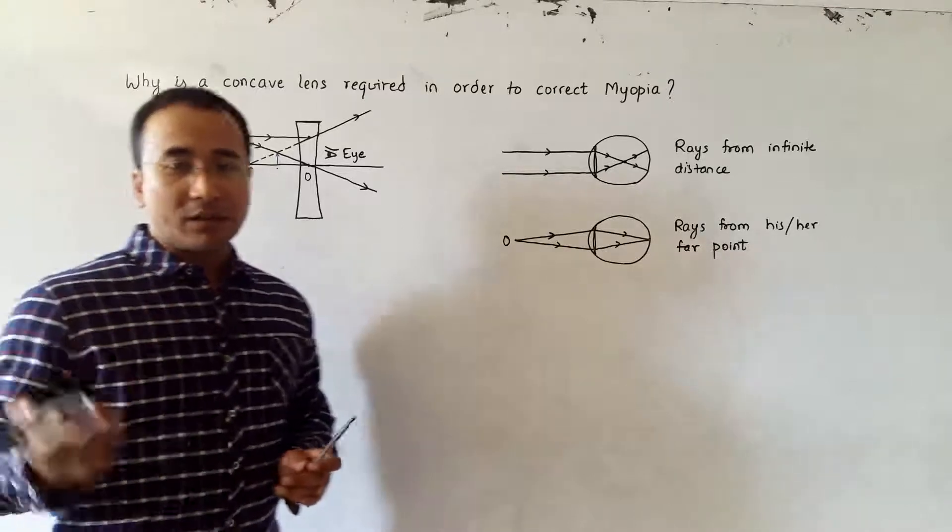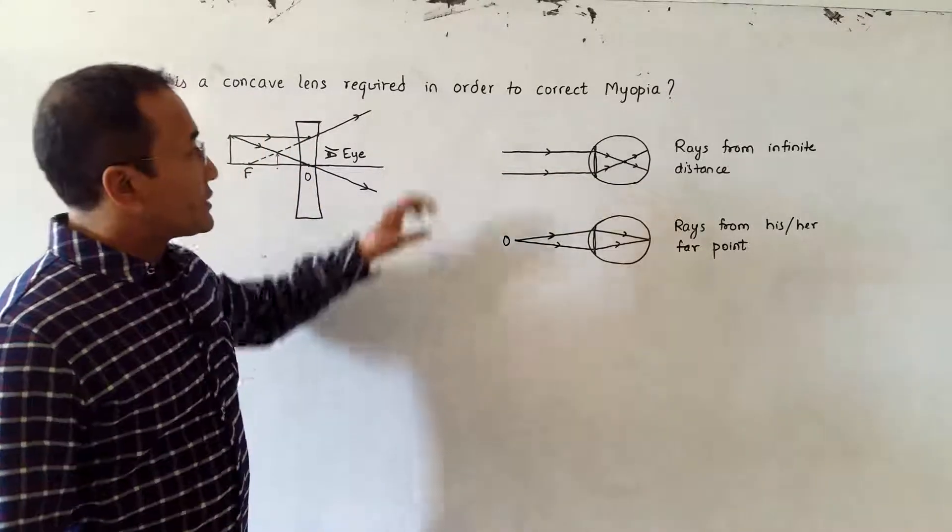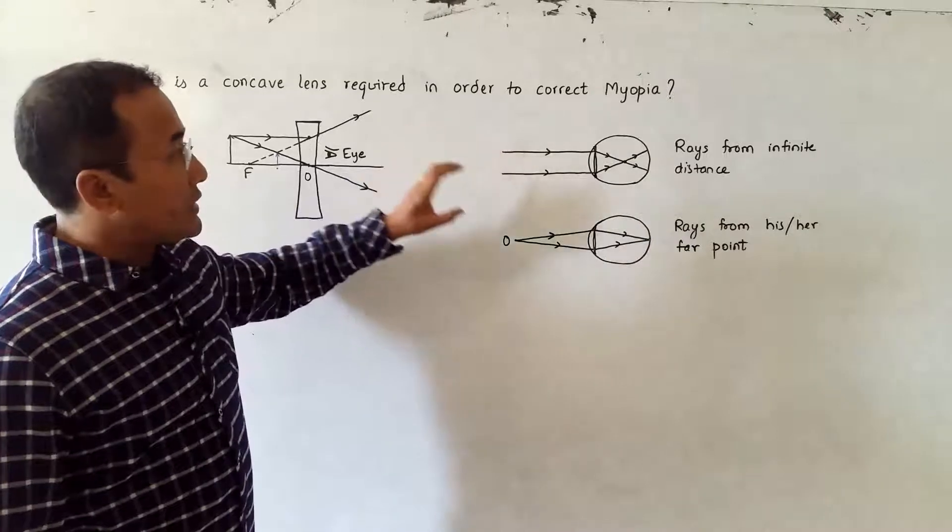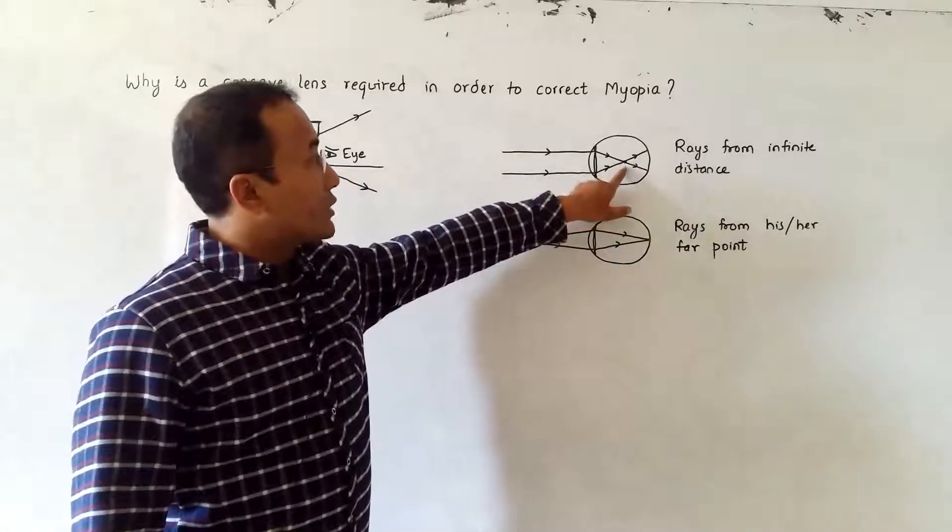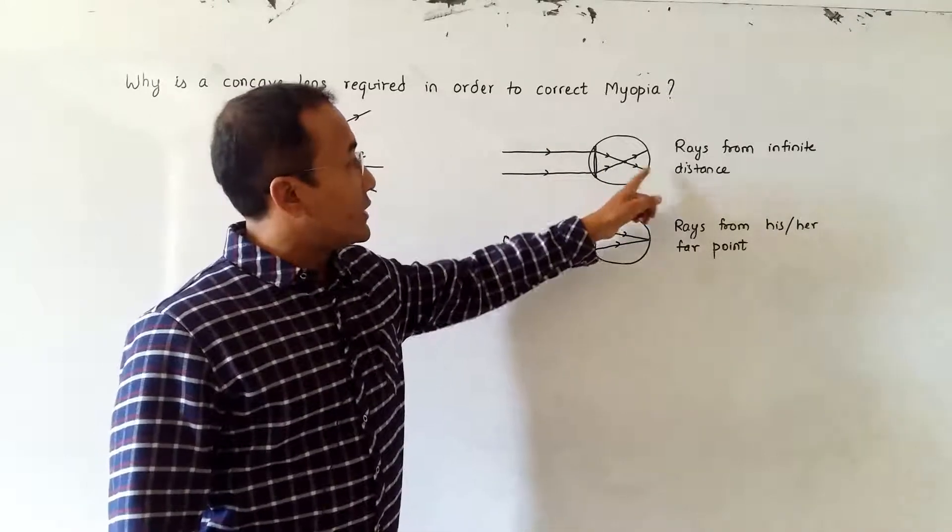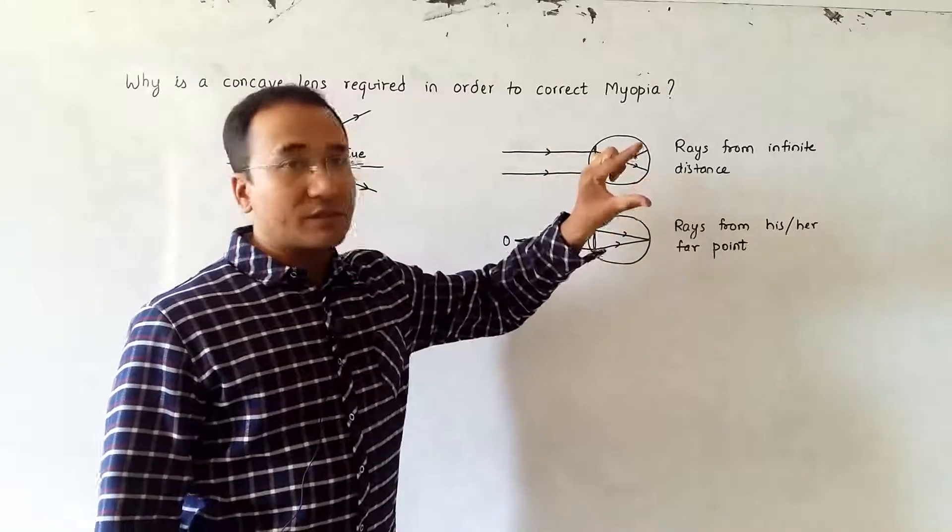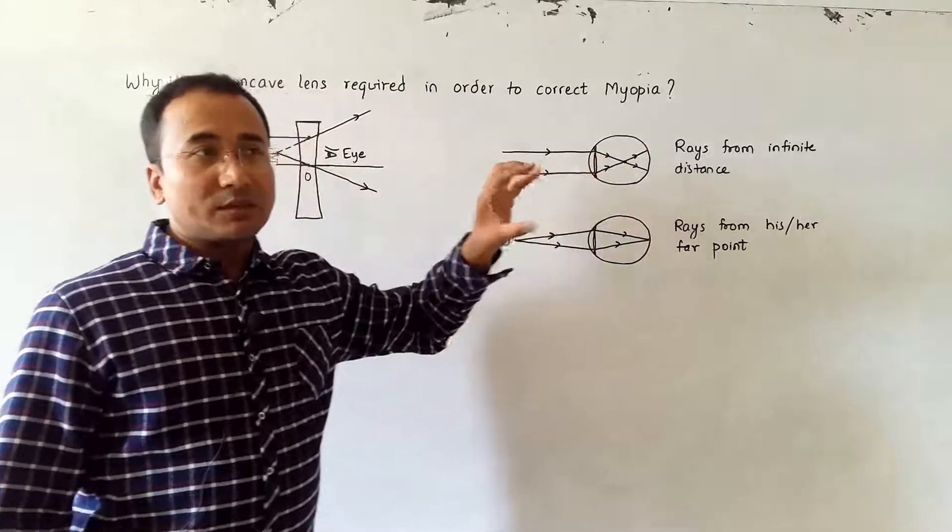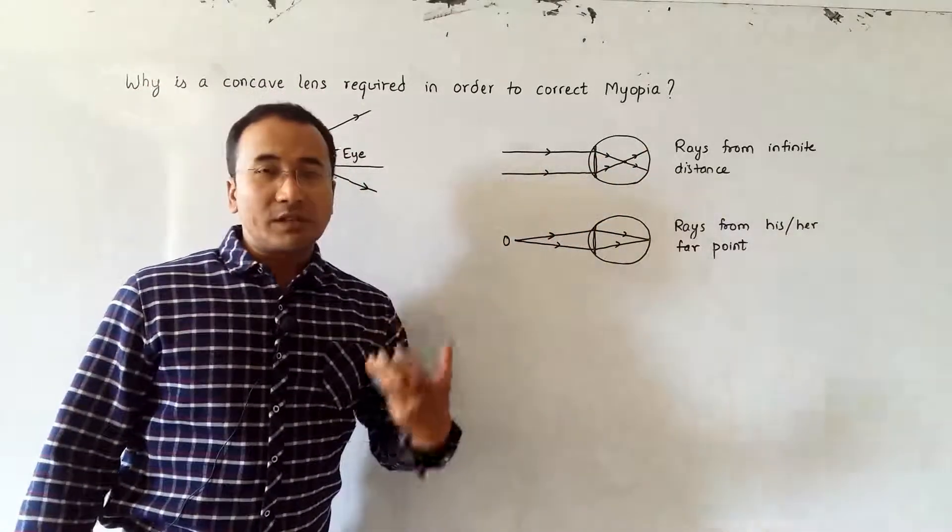When light rays are coming from far away, these light rays will be focused right before reaching the retina. So when they are at the retina, they are no longer focused; they are diverged. That's why the image formed on the retina will be very unclear or blurred.